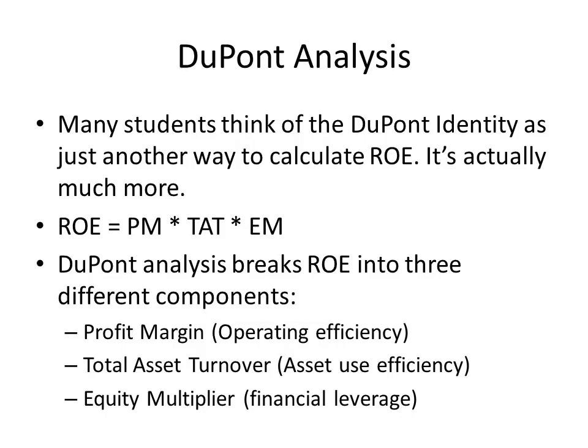Let's talk more about operating efficiency and asset use efficiency. There are basically two ways to increase profit margin: you can either increase your selling price or decrease your costs. Oftentimes market competition will determine what your selling price is, so the only thing you really have under your control would be your costs. This profit margin measure is actually a measure of how well you are controlling your costs, and total asset turnover is how efficiently you are using your assets.